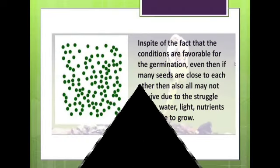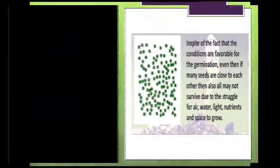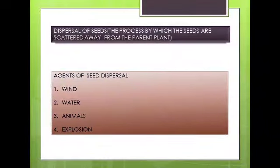Even when conditions are favorable for germination, if many seeds are close to each other, all may not survive due to the struggle for air, water, light, nutrients, and space to grow. To avoid growing very close to each other, plants take the help of agents like wind, water, or animals to scatter their seeds. These agents carry the seeds and scatter them away from the parent plant. The process by which seeds are scattered away from the parent plant is called dispersal.